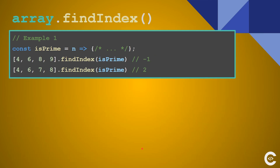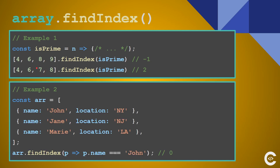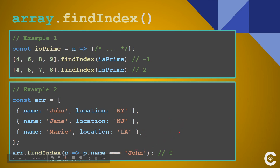findIndex searches for an element and returns its index. On the first execution it returns -1. On the second execution it returns 2, which is the index of the prime number. In the objects example it returns 0 because the person with name John is at position 0.